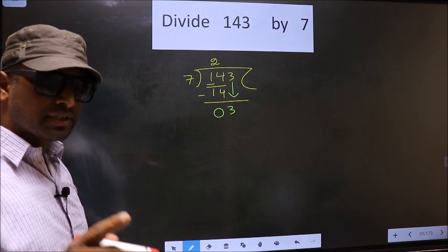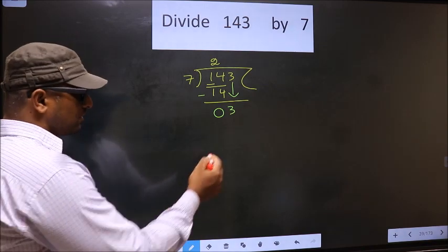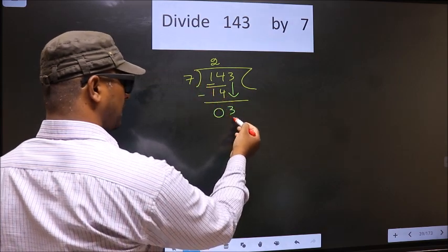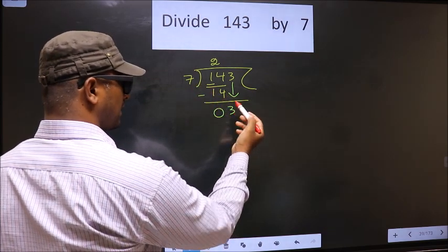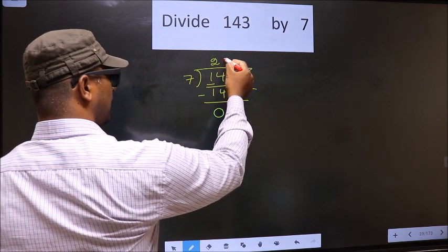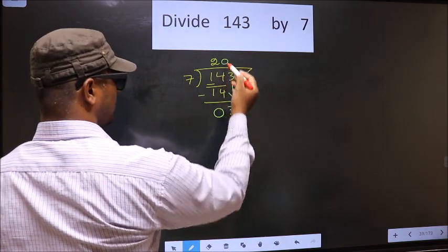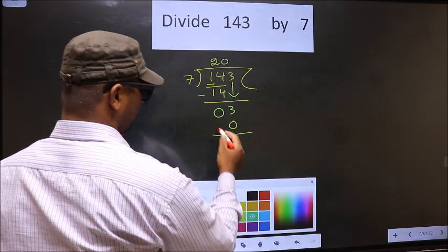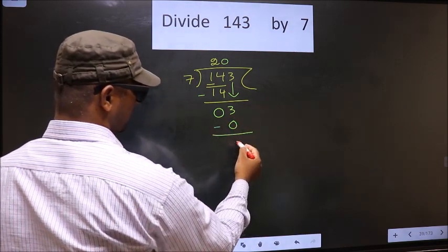Instead, what you should think of is, what number should we write here? If we write 7 here, that is larger than 3. So what we do is, we take 0 here. So 7 into 0, 0. Now you subtract. 3 minus 0, 3.